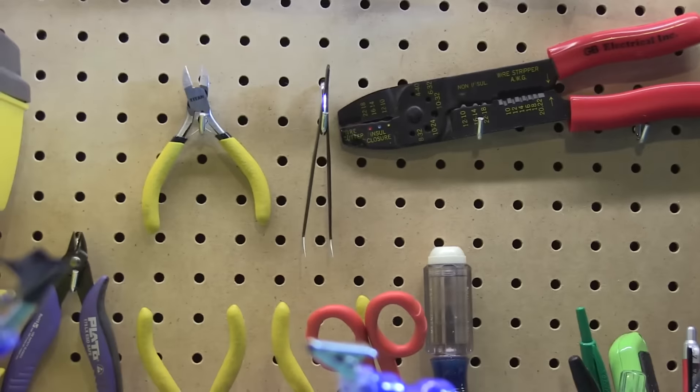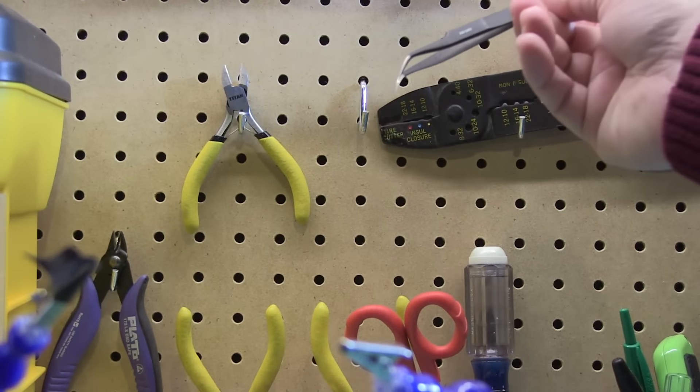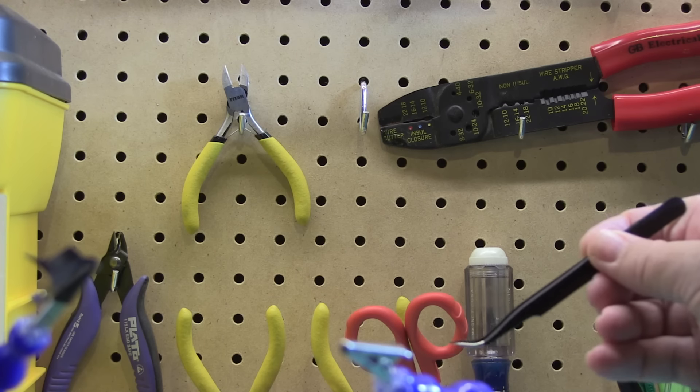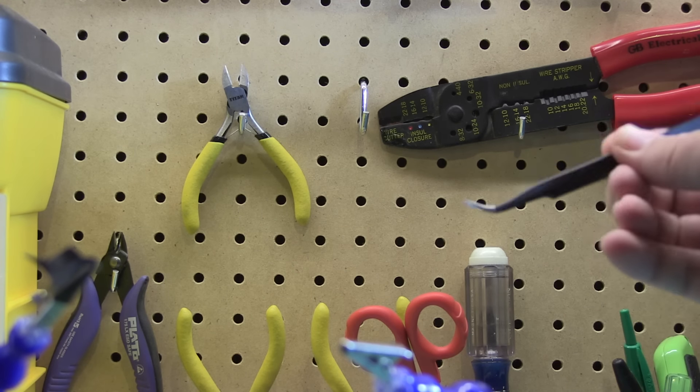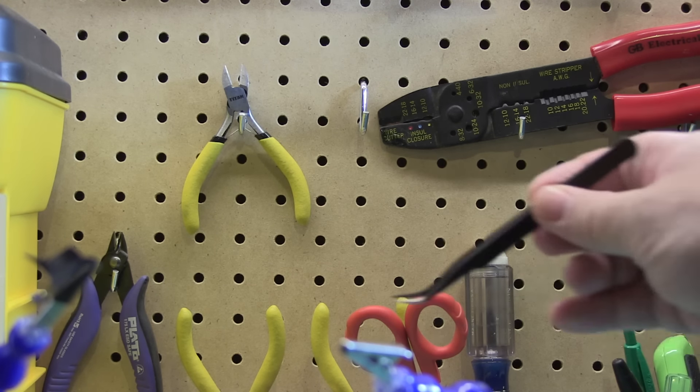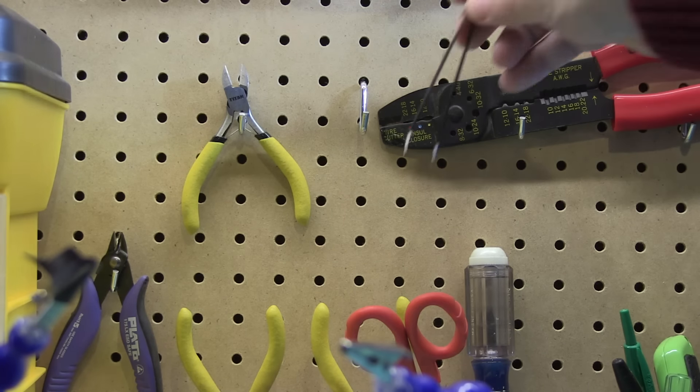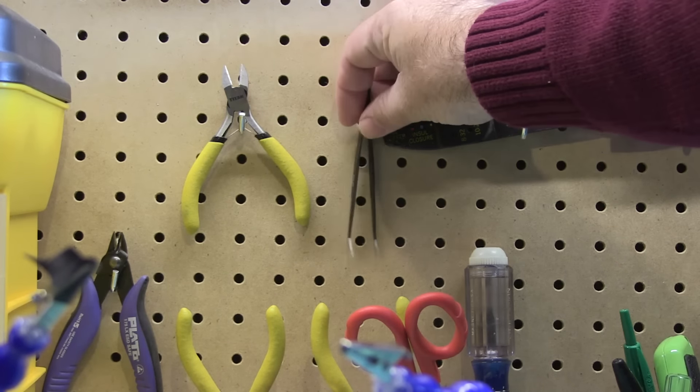Also, there's some ESD tweezers here and what these allow me to do is when I'm soldering, I hold down the wire with these so it's pretty helpful to have. It's a small tool. Plus, if I want to pull something through a tight space I can easily grip into it. They're better than just using needle nose because sometimes the needle nose are too big.